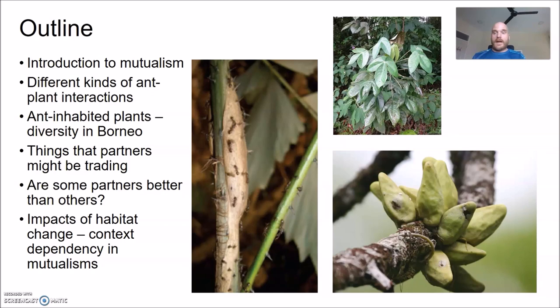We'll talk about the different kinds of ant-plant interactions, then focus specifically on the island of Borneo and the diversity of ant-inhabited plants here. We'll also discuss what the two mutualistic partners might be trading with each other, whether some partners are better than others, and finally some research I've been involved with looking at the impacts of anthropogenic habitat change on mutualisms — particularly how the costs and benefits play out and whether those are affected by habitat change.